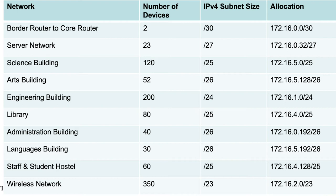For the arts building with 52 devices, we're using a /26 prefix: 172.16.5.128/26. For the engineering building with 200 devices, we're using a /24 and the prefix allocated is 172.16.1.0/24. The library building has 80 devices and is using the prefix 172.16.4.0/25. The administration building, which has 40 devices and was allocated a /26, is using 172.16.0.192/26. The languages building with 30 devices is using 172.16.5.192/26. The staff and student hostel with 60 devices is using 172.16.4.128/25, and the wireless network is using 172.16.2.0/23.